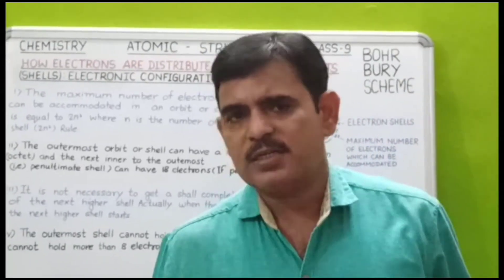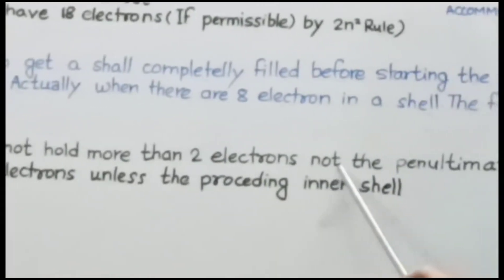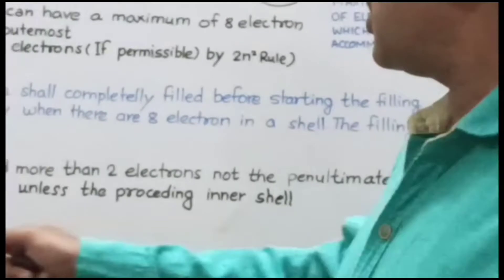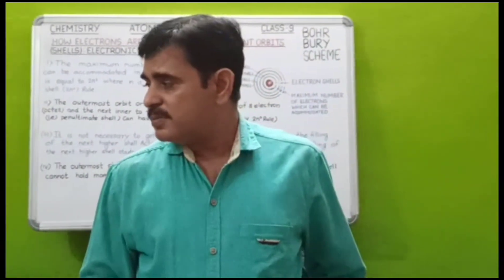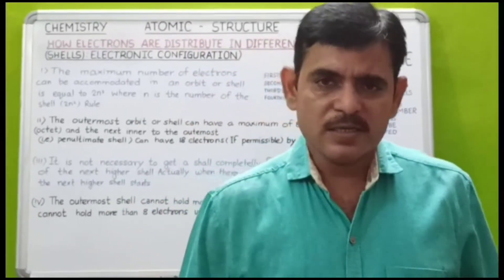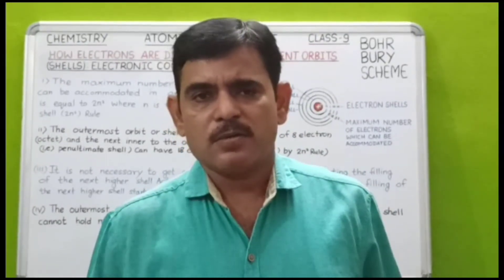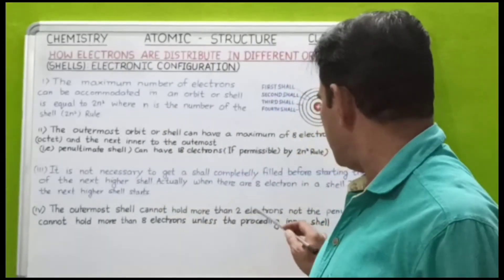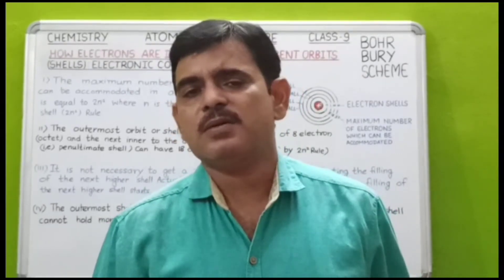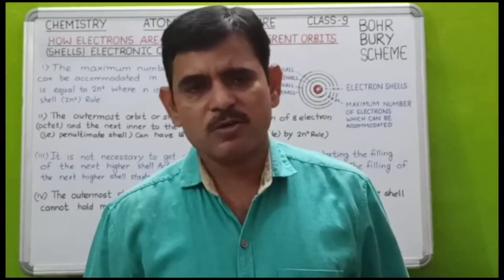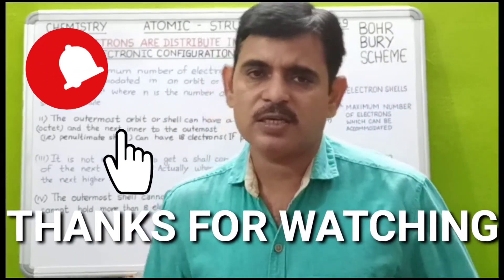Electron configuration continuously चालू हो जाती है। Bohr का चौथा नियम: the outermost shell cannot hold more than 2 electrons, nor can the penultimate shell hold more than 8 electrons, unless the preceding inner shell is filled. Inner shell में 2 electrons और outer shell में 8 electrons — यह octet number से अधिक नहीं होना चाहिए। इसके बाद अगले video में मैं आपको electronic configuration किस तरह से करते हैं, वह बताऊंगा।